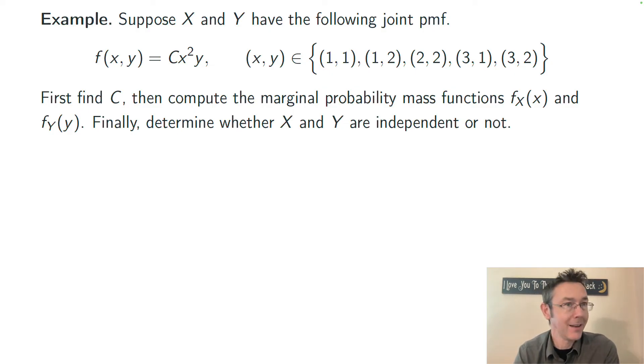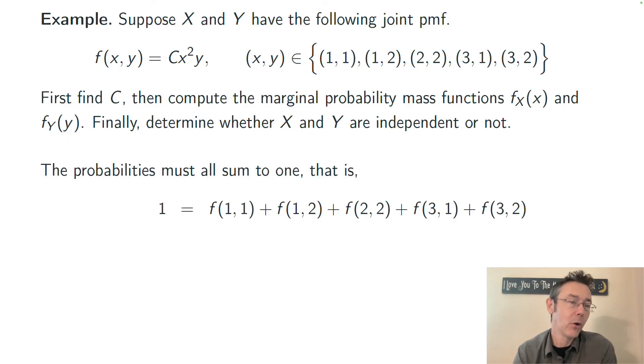First we want to find that value c, and then we want to compute the marginal probability mass functions f_X and f_Y. Once we've done that, we'll determine whether or not these two random variables are independent. If this is actually a legitimate probability mass function, then when we add up all of the different probabilities for all the different values that we have in the support, we should get 1.